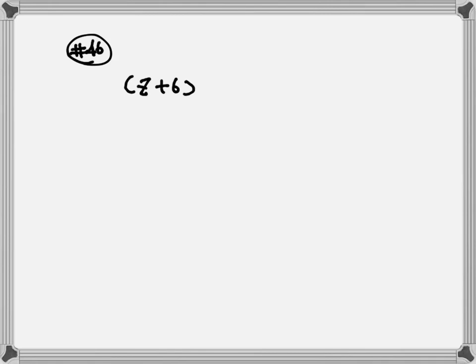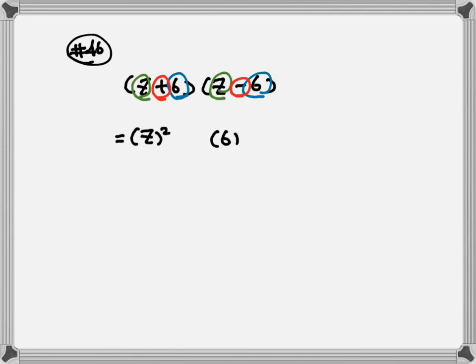Next, let's look at number 46. We have Z plus 6 and Z minus 6. We can use the FOIL method, or there's another method called the difference of two squares. For the difference of two squares, look at the numbers inside the parentheses — they are exactly the same, but they have different signs: one is plus, one is minus. All you need to do is square the first number, square the last number, and put a minus in between. So the answer will be Z squared minus 36.